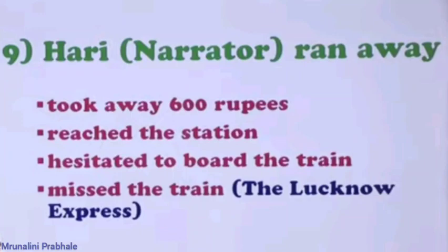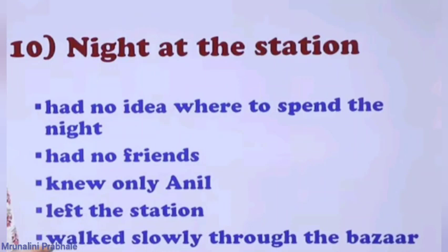With the train already missed, Hari had no idea where to spend the night. He had no friends in that city — the only person he knew was Anil, but he had deceived Anil by stealing his money. He then left the station and walked slowly through the bazaar.